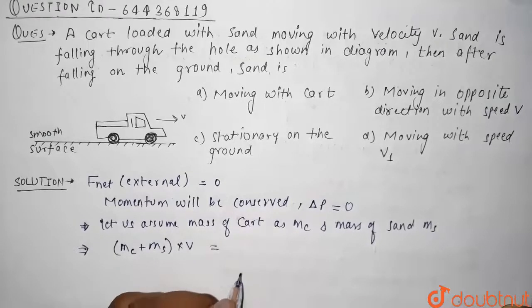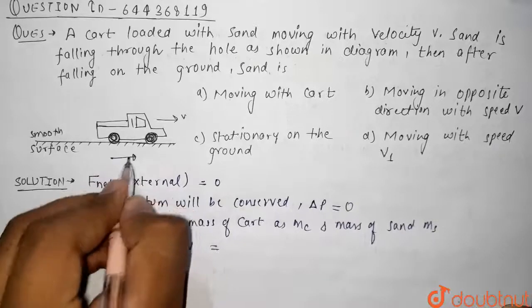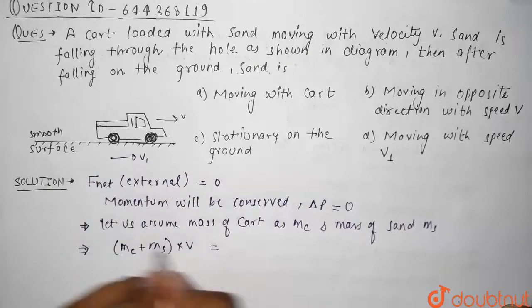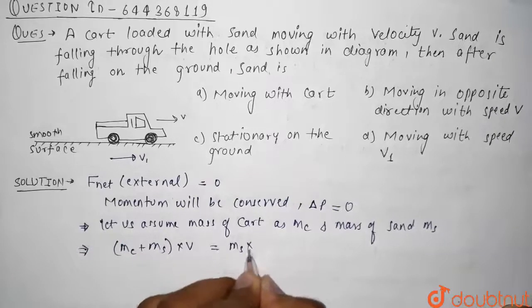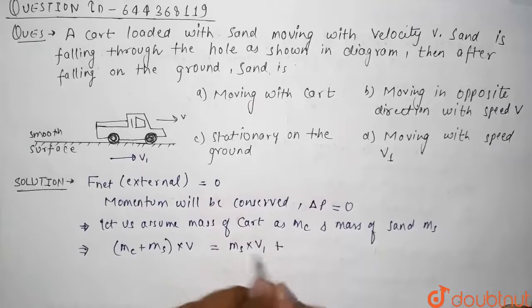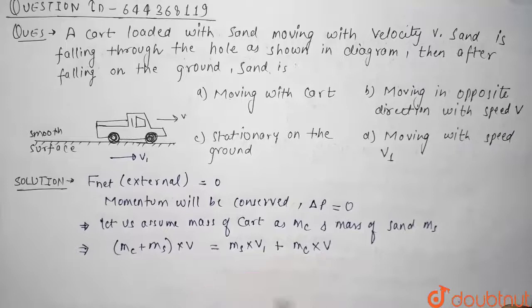So what will be the final momentum? Let us assume that the final velocity of sand is v1. So the final momentum of the system will be mass of sand × v1, that is momentum of sand, plus mass of cart × v because the cart is still moving with the same speed.